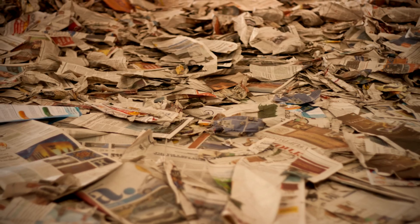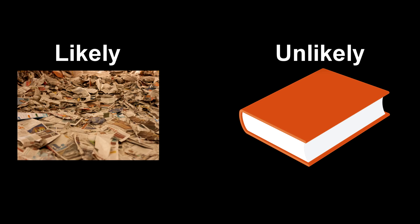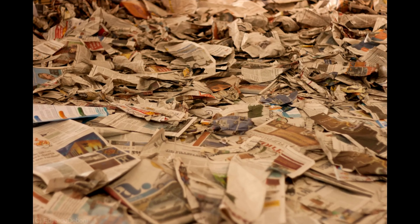This is because simple probability has done its work. There are several million different ways the pages could land chaotically, yet there is only one way they could fall in order. Therefore chaos was far more likely to happen than order to remain. This phenomenon is what we call entropy.